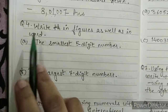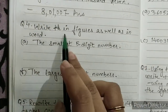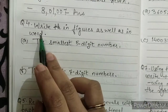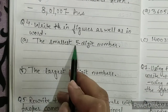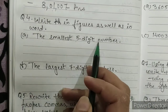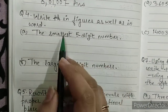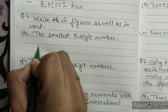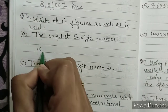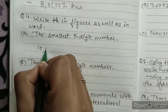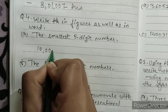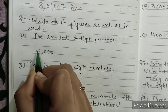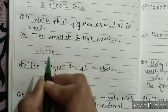Question number 4: write in figures as well as in words. Part a) the smallest 5-digit number. The smallest 5-digit number is 10,000 — ones, tens, hundreds, comma, ten thousands. Written in words: ten thousand.